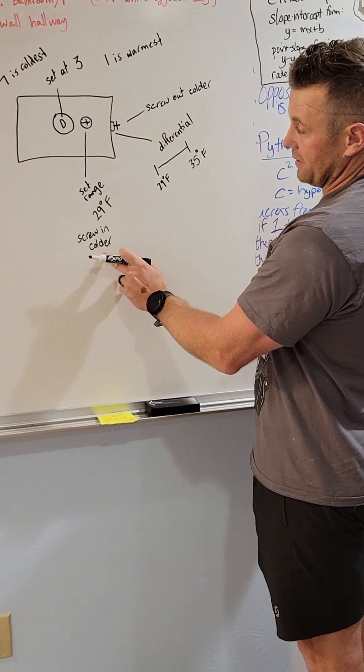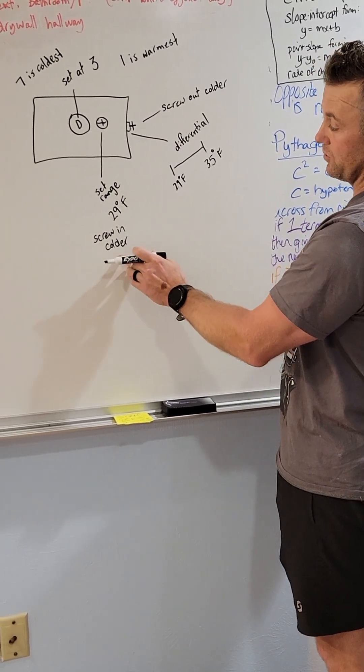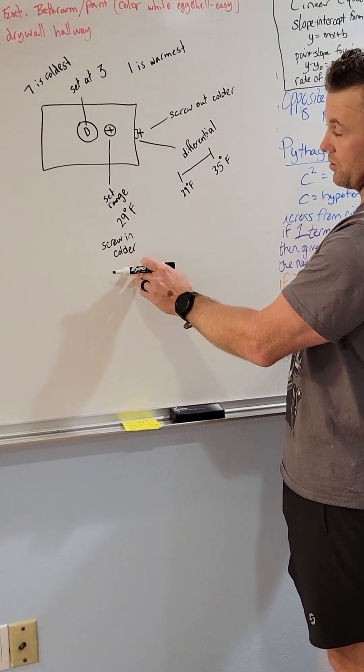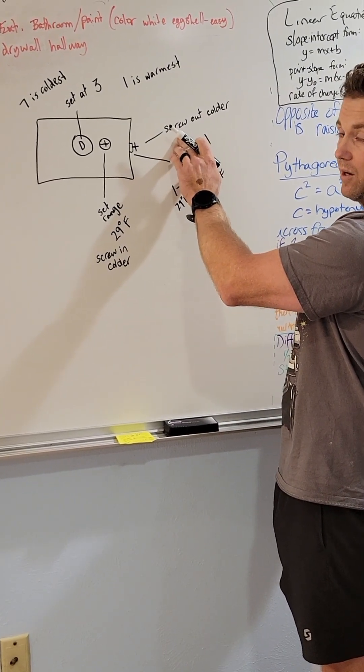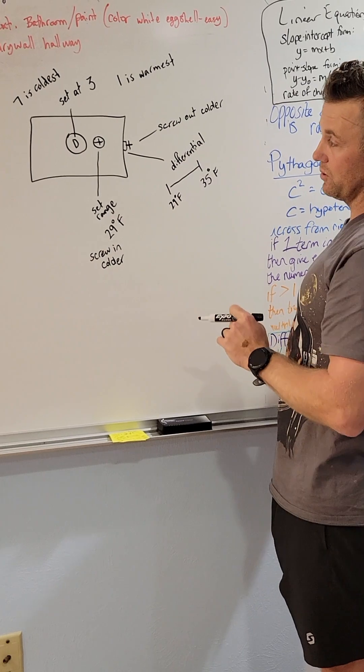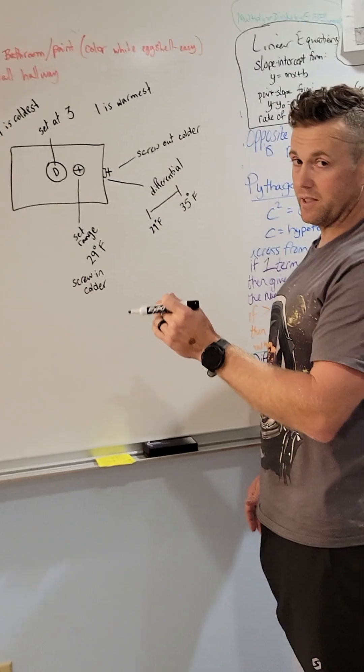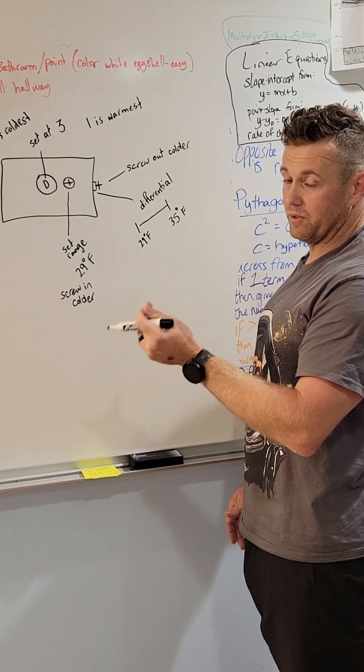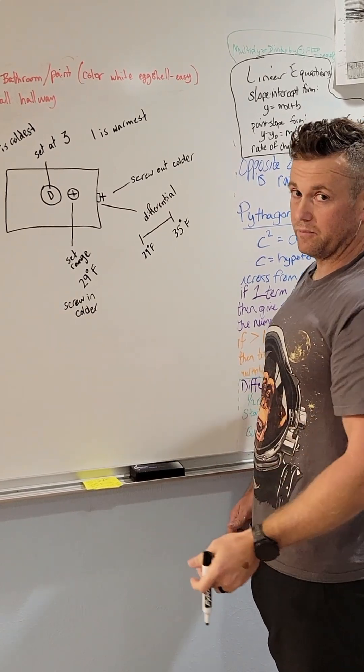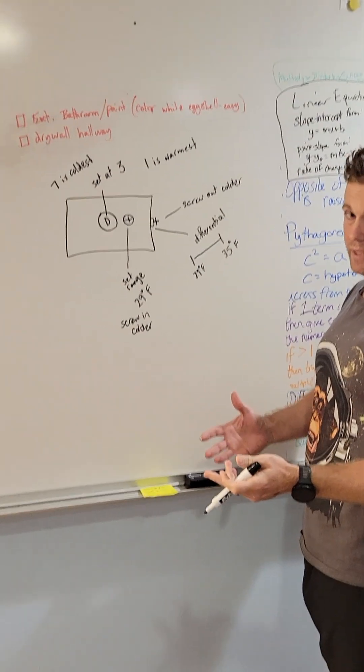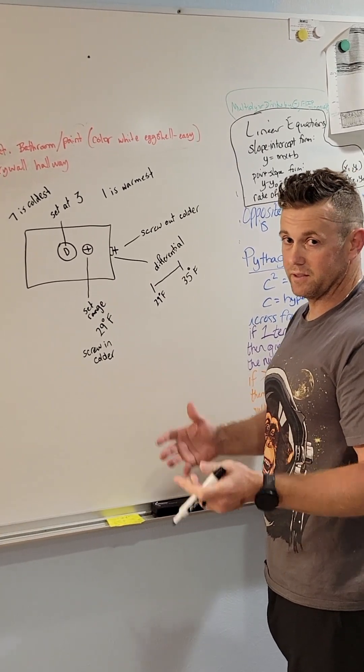So when you screw this in, this makes it colder. So screwing it in clockwise makes it colder. And on the differential, screwing it out or counterclockwise makes it colder. Different variations have different ways they operate. You've got to kind of play with that if you don't have a spec sheet or any way of knowing that. But I thought this would be helpful. It's been tremendously helpful for me on understanding thermostats better for refrigeration. Hopefully it does you too.